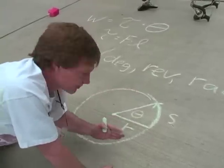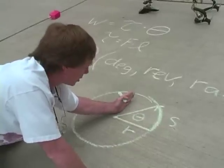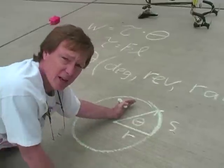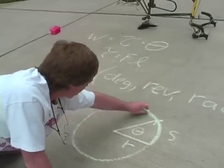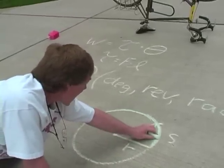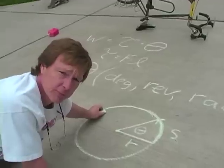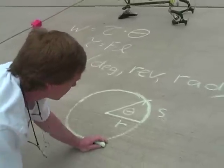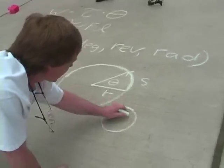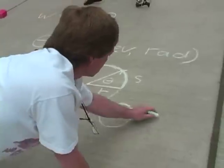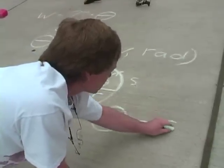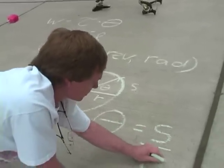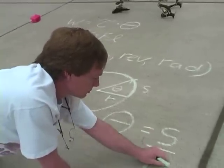They're proportional. If I move through 90 degrees, I move through this much perimeter. If I double the angle to 180 degrees and move all the way over to here, I double the distance I move too. So the simplest equation: the angle theta is equal to the distance along the perimeter divided by the radius of that circle.